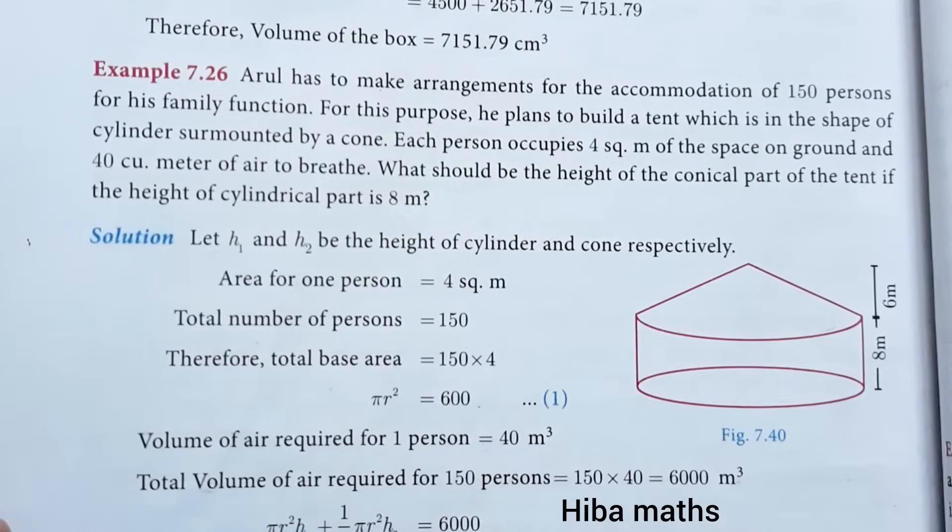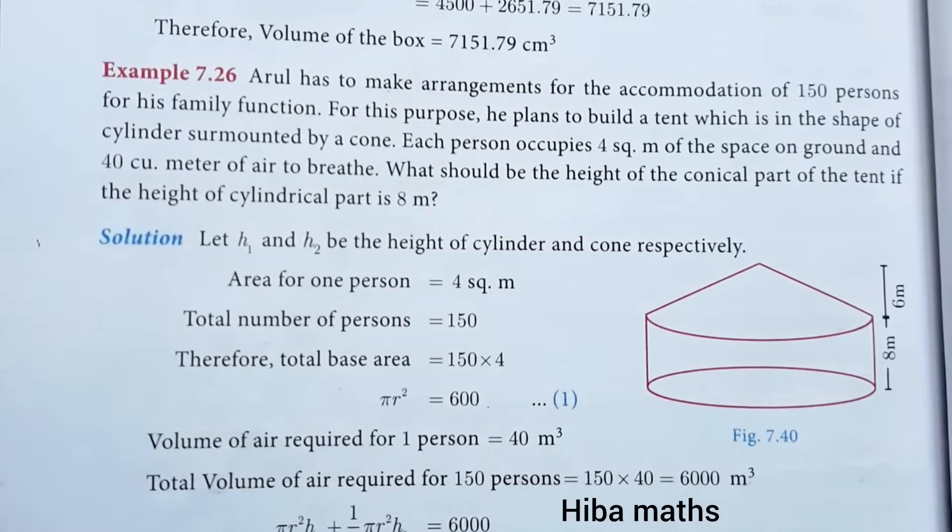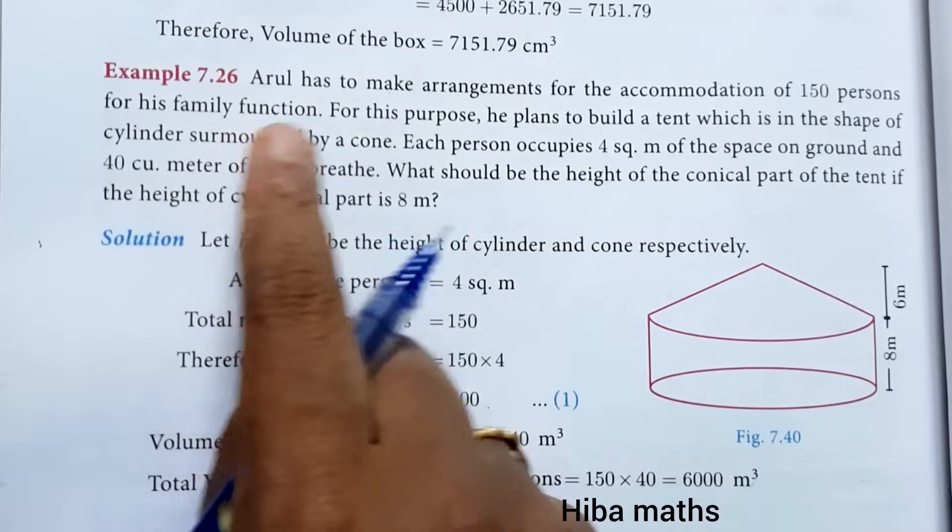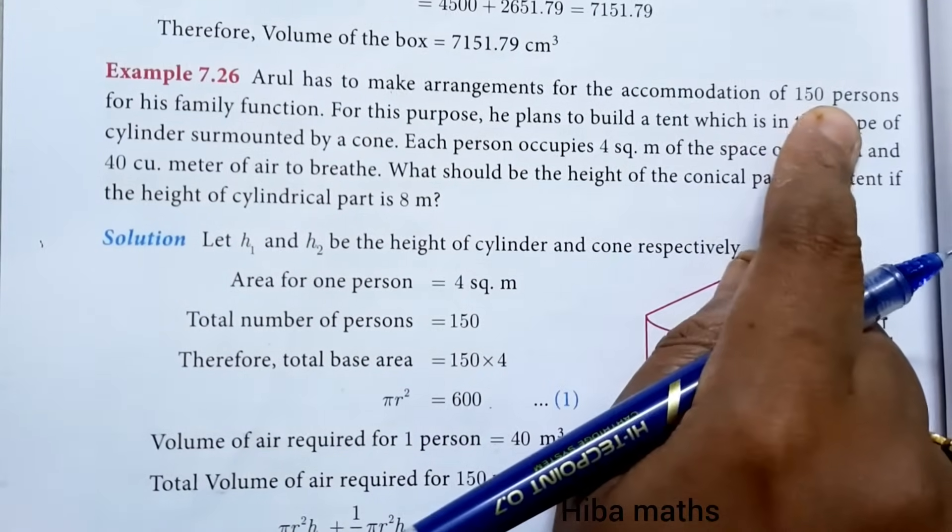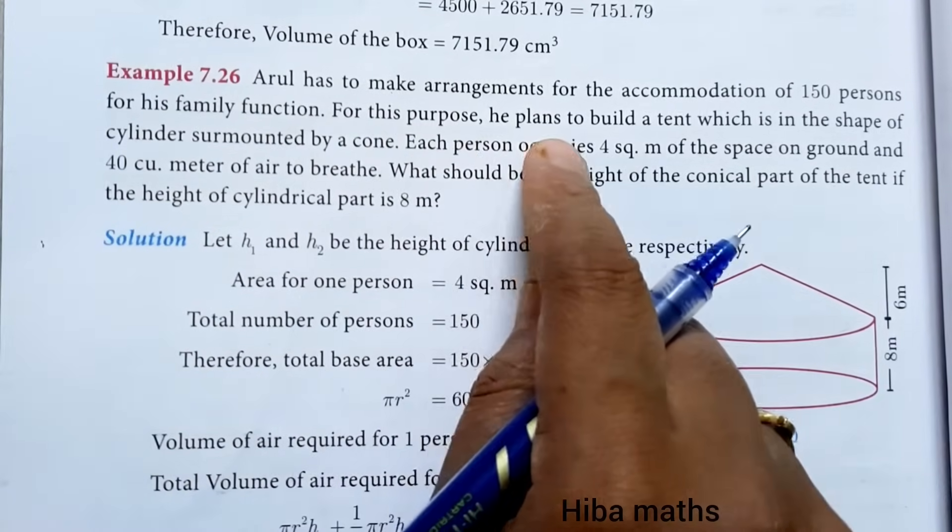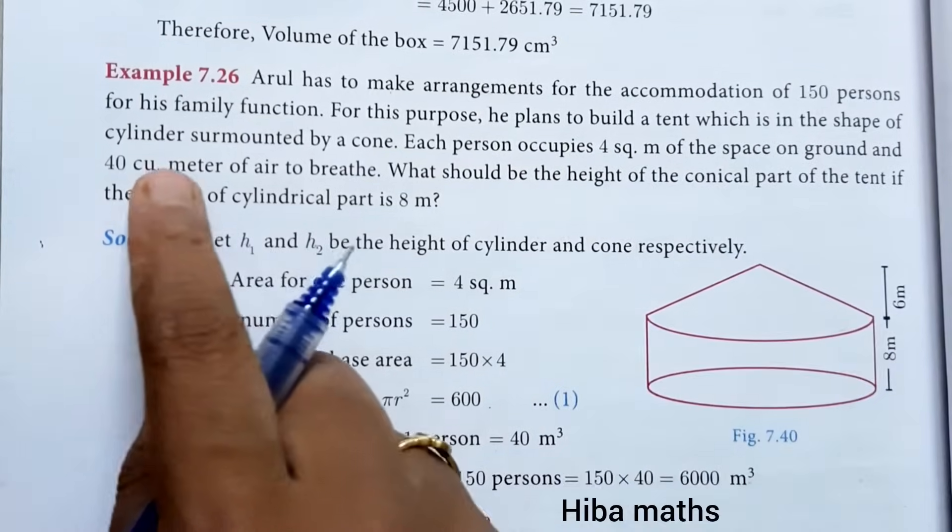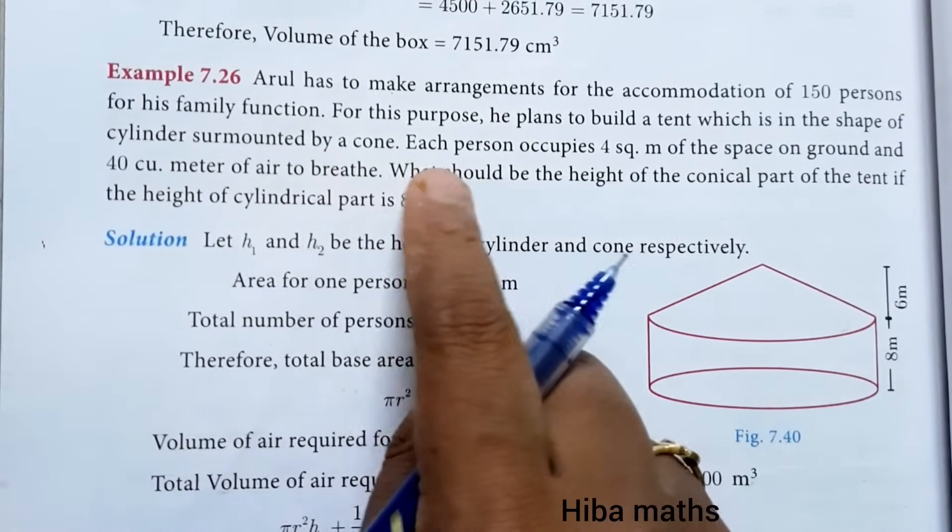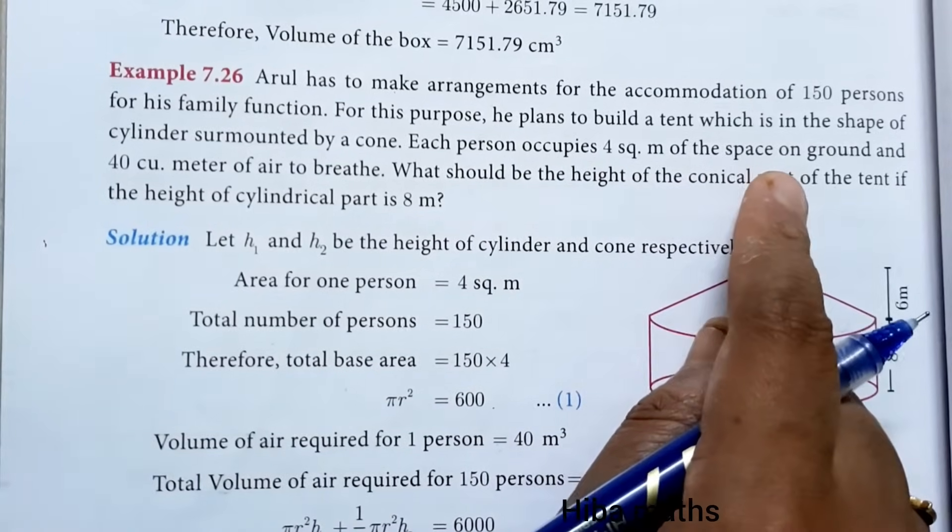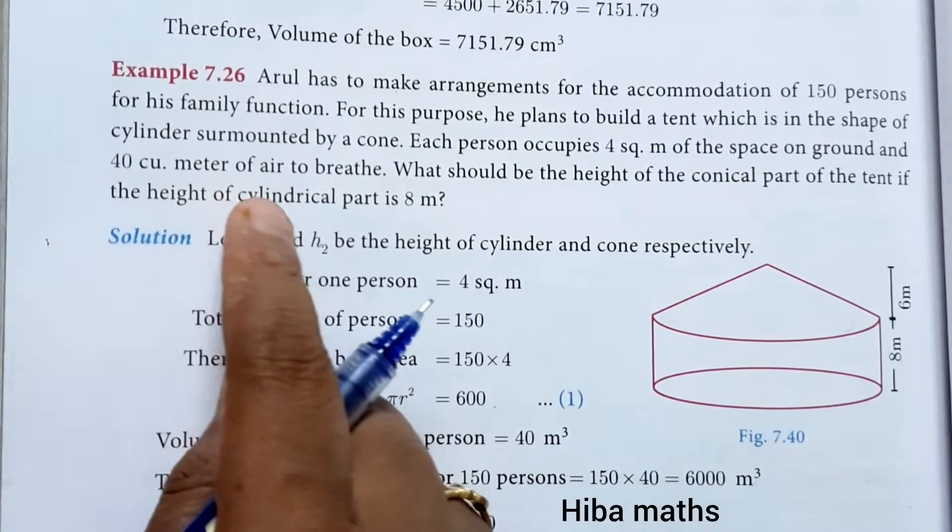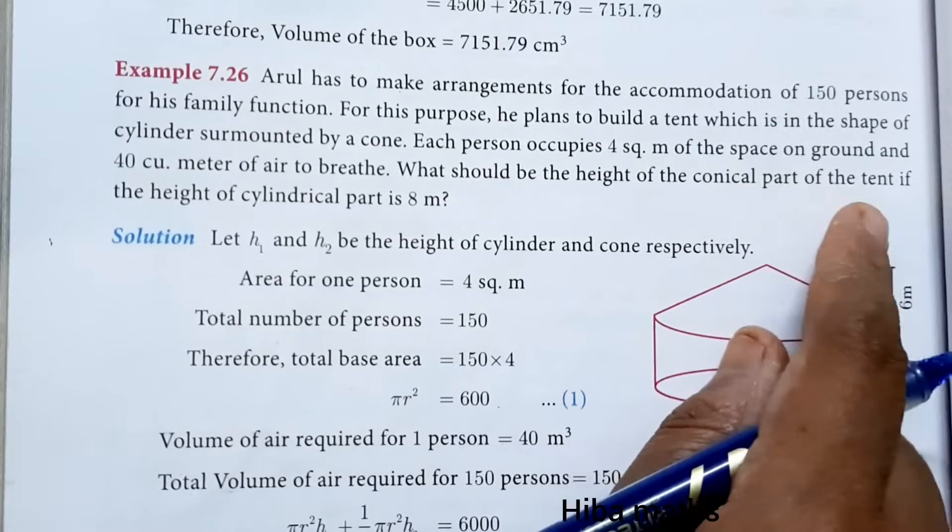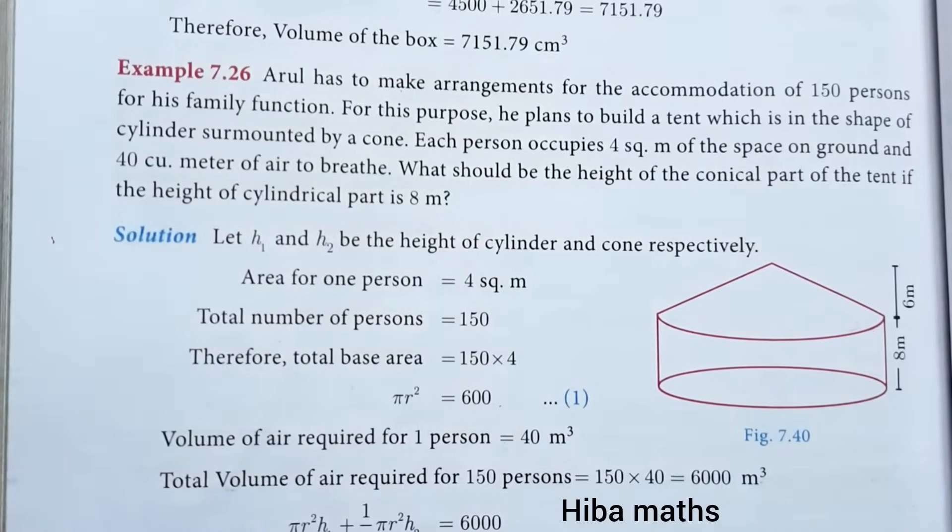Hello students, welcome to Hiba Maths 10th Standard Maths Chapter 7 Example 7.26. Arul has to make arrangements for the accommodation of 150 persons for his family function. For this purpose, he plans to build a tent which is in the shape of a cylinder surmounted by a cone. Each person occupies 4 square meters of space on ground and 40 cubic meters of air to breathe. What should be the height of the conical part of the tent if the height of the cylinder is 8 meters?